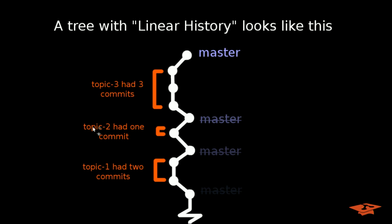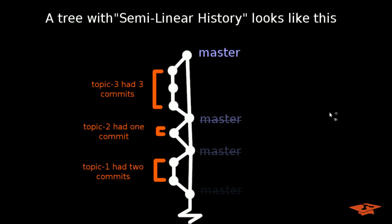But the point is that with respect to the destination branch of the merge request and all the topic, aka source branches that come in, the history will end up looking like this for the linear history case, and this for the semi-linear history case.